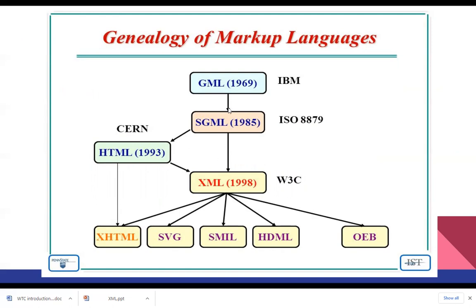The hierarchy of markup languages starts with GML by IBM, then SGML standardized by ISO. Because SGML is complicated, the next version for presentation is HTML. A lightweight version of SGML is XML, and XHTML is a combination of HTML and XML.